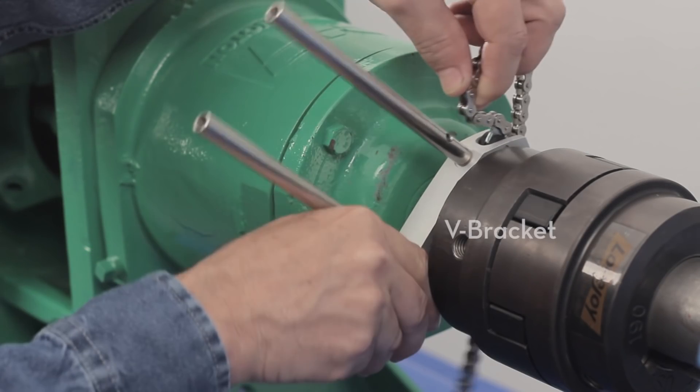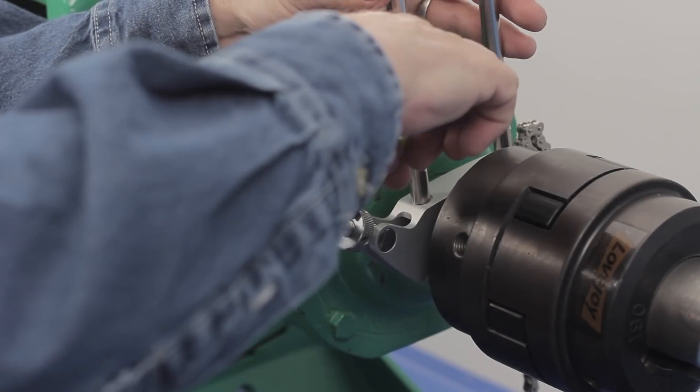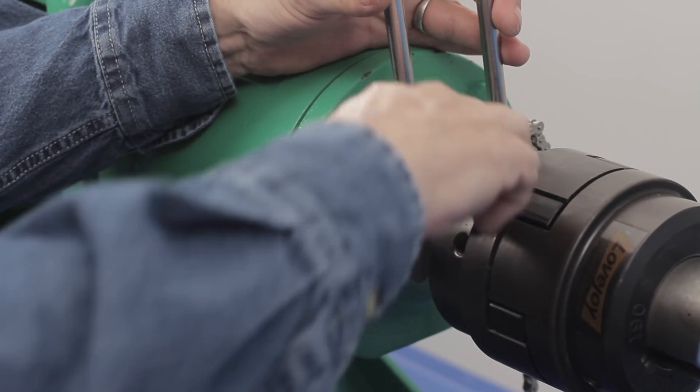Mount the first V-bracket to one shaft and hand-tighten the nut. Using the tightening tool, turn the nut one full turn.